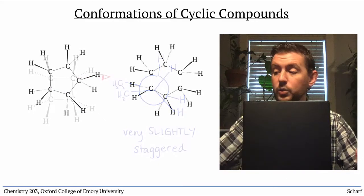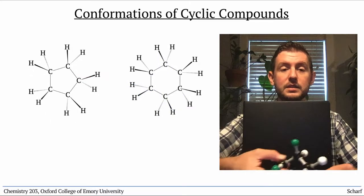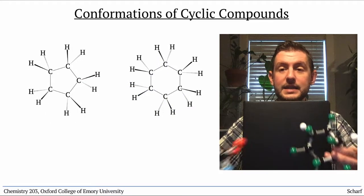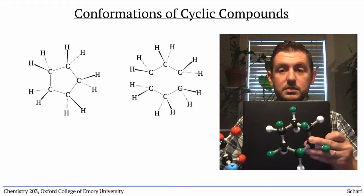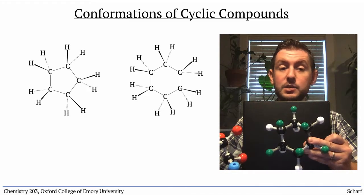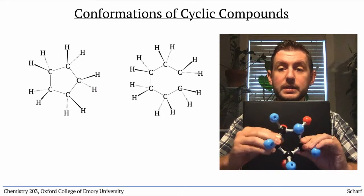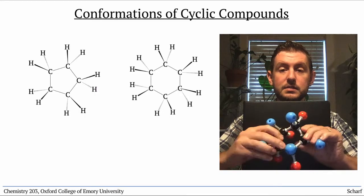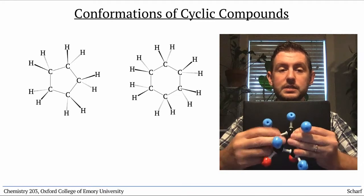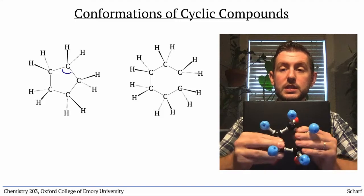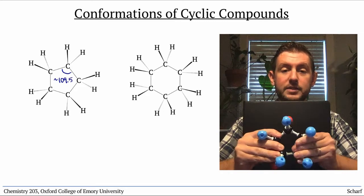With larger rings, cyclopentanes and cyclohexanes and bigger, there's much more flexibility. And the internal carbon-carbon bond angles can get at least pretty close to their desired 109.5 degrees.